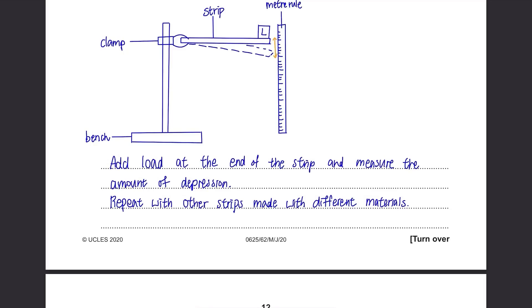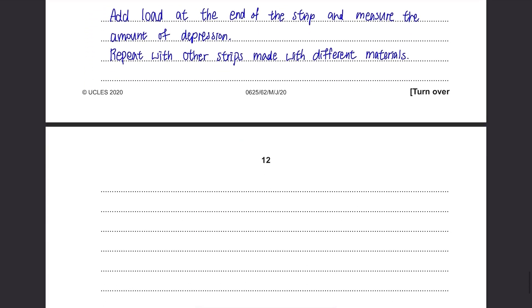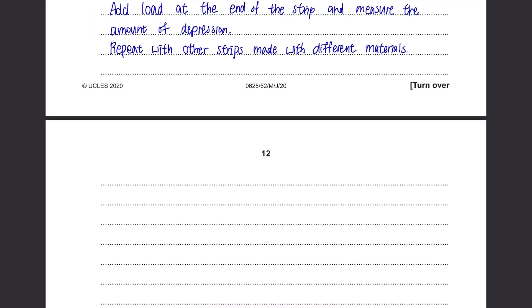Then the next step is about the factors that need to be kept constant. Most importantly, although the strips are made of different materials, they need to have same thickness because obviously, the thicker strips will bend less than the thinner ones. Use the same loads throughout the experiment so it doesn't affect the results. You just need to write one of these because only one mark will be awarded for constant variables.